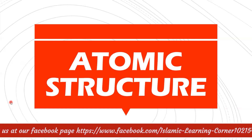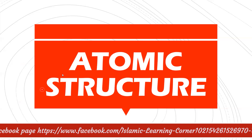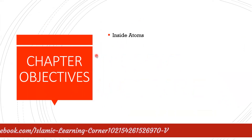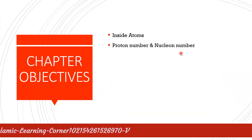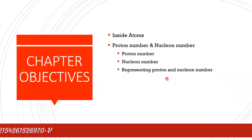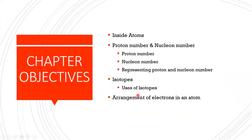It is a very important chapter and forms the basic basis of chemistry. Coming towards the chapter objectives, we will start with what is inside atoms — what atoms are made up of. We will study proton number and nucleon number, isotopes and their uses, and finally the major topic: the arrangement of electrons in an atom, including what valence electrons are.